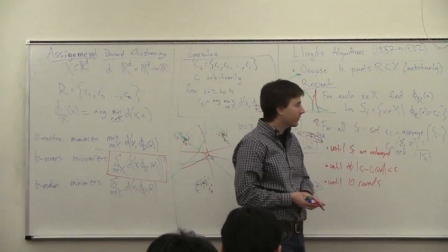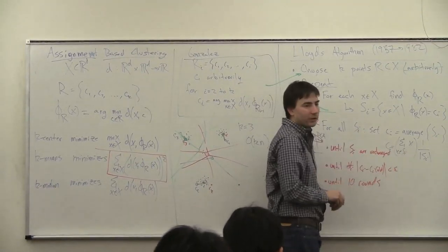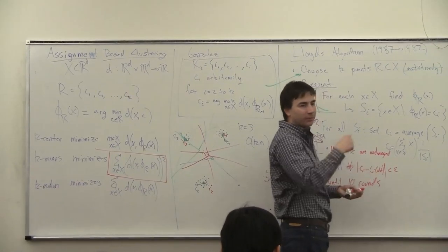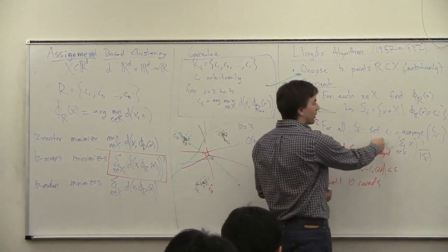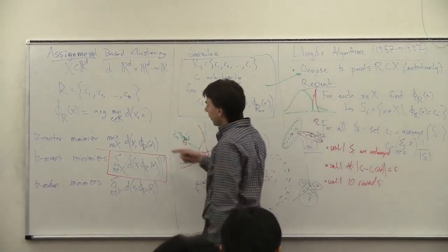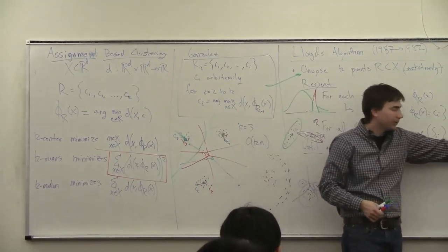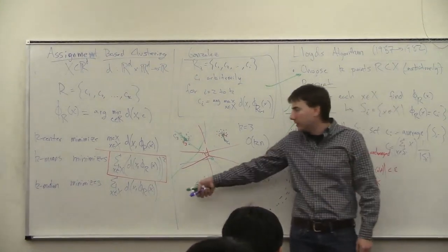Instead of finding some regular point by averaging, you can just say the center must be one of the points in the set. Then you check all the points in the set and find the one that minimizes the cost function. You can use whichever variant - either the median or the mean - and find the one that minimizes this distance.